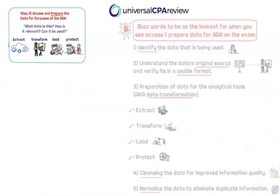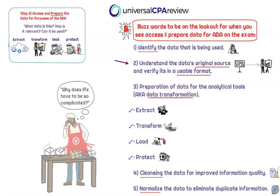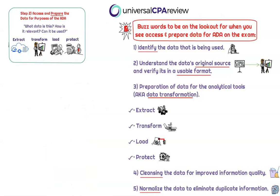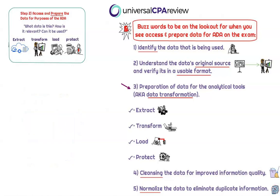Step two is where we access and prepare the data for purposes of the audit data analytics. It means we're identifying data and understanding where it came from — what is its source. We ultimately need to verify that we can even use this data, in the same way that when we get home we need to verify whether we needed vanilla or vanilla extract, or whether we wanted egg whites, not eggs. This is where we're going to be preparing the data for the analytic tool we're going to use. This process is known as data transformation.